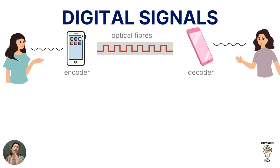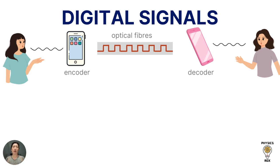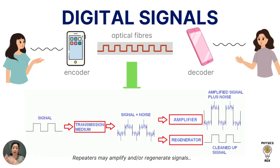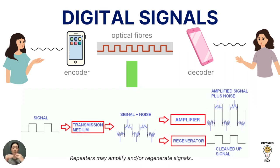With digital signals, the phone still converts sound signals into electrical signals, but the difference is that digital signals are based on on-off pulses. The sound is encoded into electrical signals using pulses, which are sent as digital signals — usually through optical fibers — to the other end. A decoder then translates those pulses back into sound signals based on the changing frequencies and amplitudes.